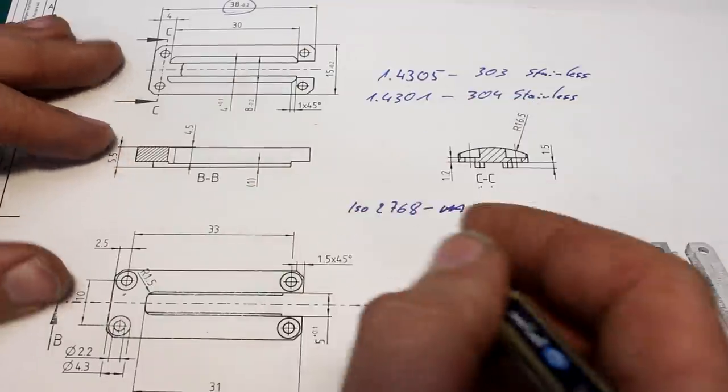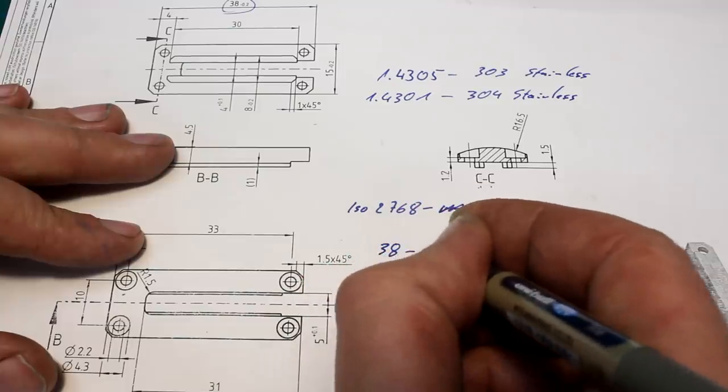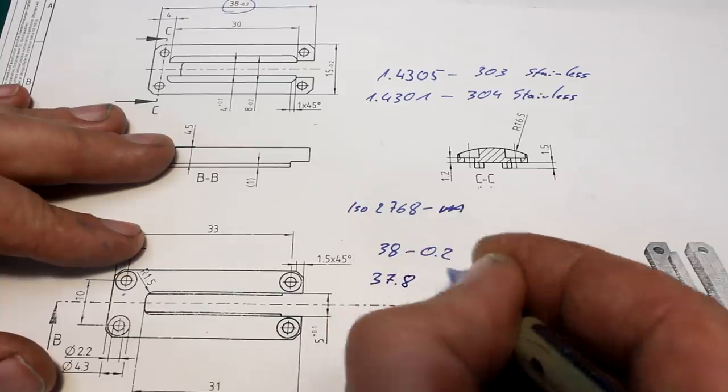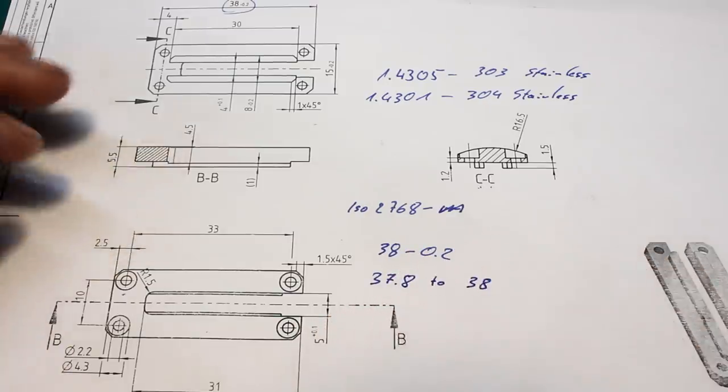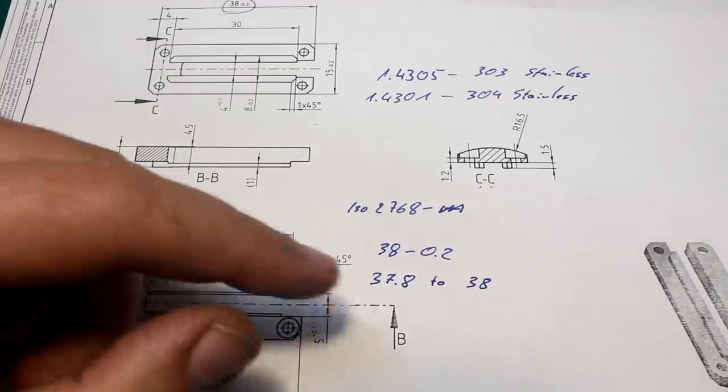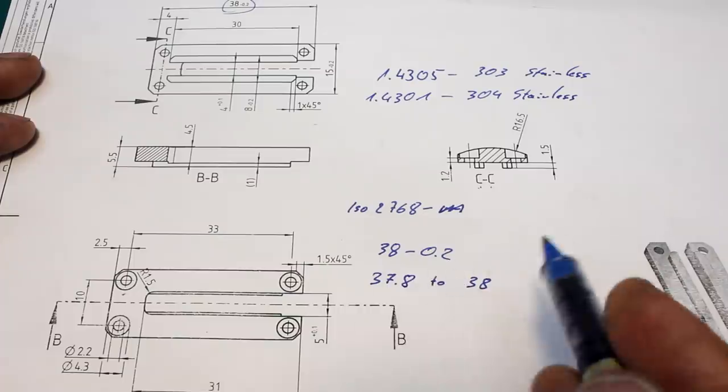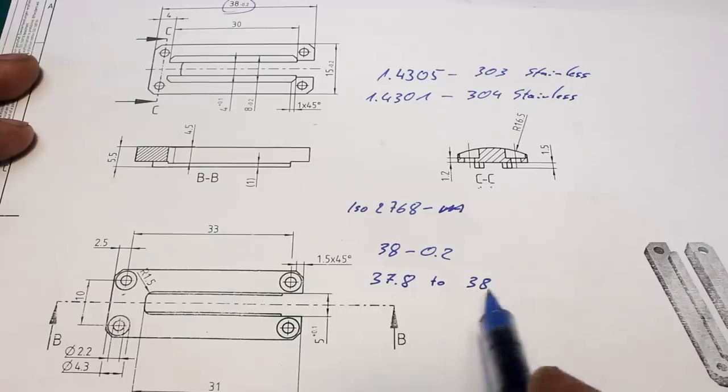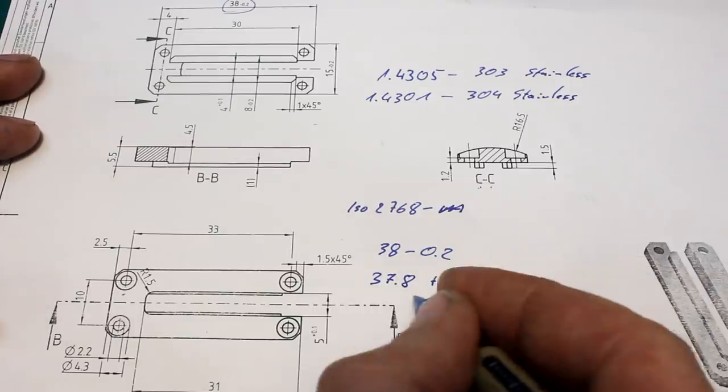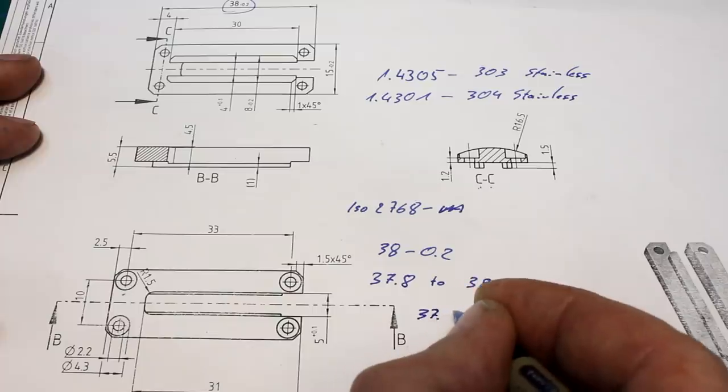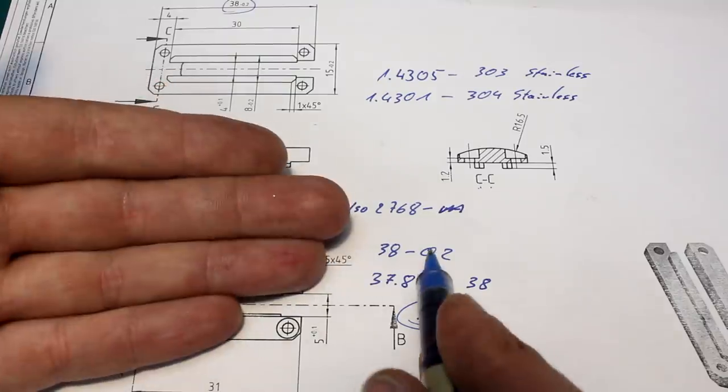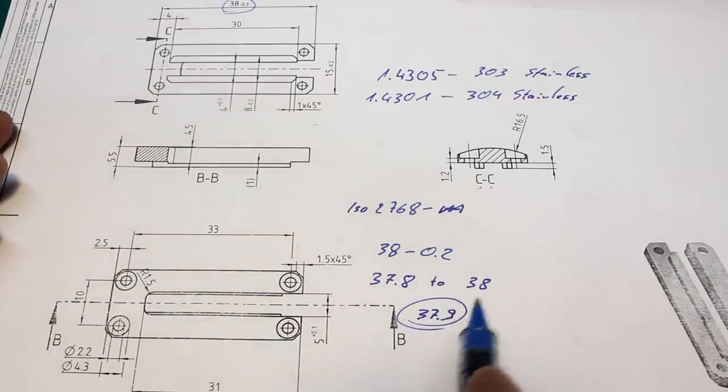If we have a dimension like 38 minus 0.2, this is different. So we have 38 minus 0.2. This can be anything between 37.8 up to 38.0. We don't write tailing zeros. Good practice would be to machine it to center of tolerance. So center of tolerance would be 37.9. This would be the target dimension that we would shoot for. And that gives us 0.1mm of tolerance to both sides. Makes it very easy.